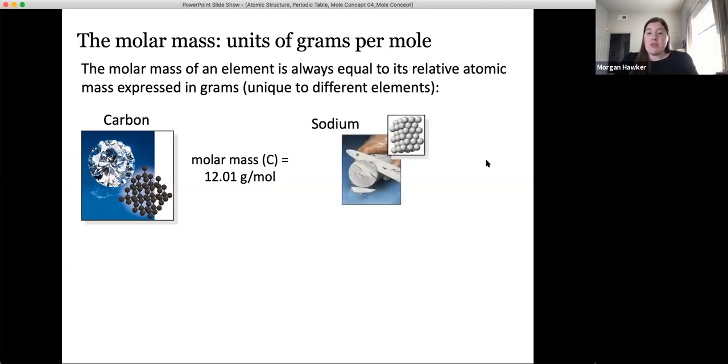The molar mass for sodium can also be looked up on the periodic table as with all elements, and that's listed as 22.99 grams per mole. Again, this means that for every one mole of sodium atoms, which is 6.022 times 10 to the 23rd sodium atoms, the mass of that quantity of matter will be 22.99 grams.